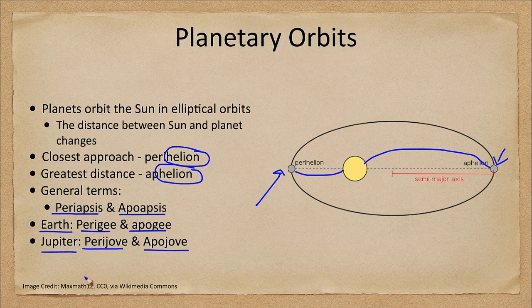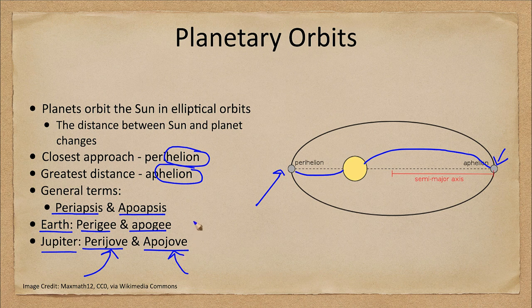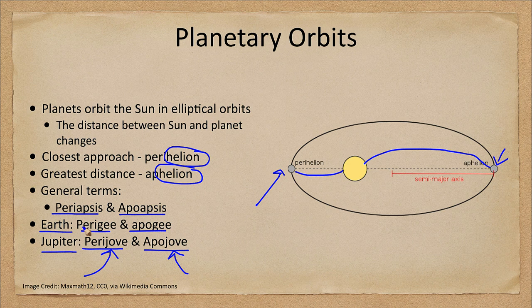When Juno comes closest, it has perijove when it's closest to the surface, and when it's furthest away, it would have apojove. Similarly, for satellites orbiting Earth, perigee is when they are closest and apogee when they are furthest away.